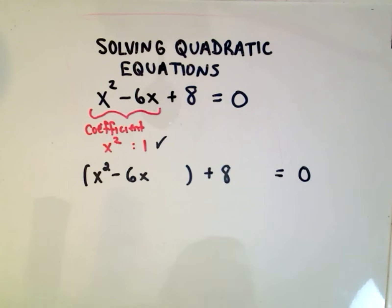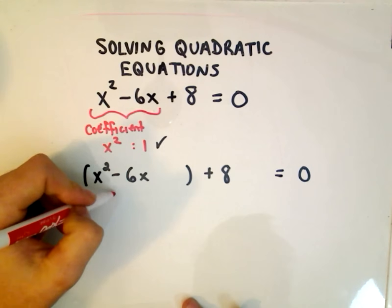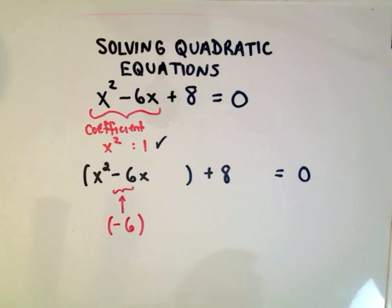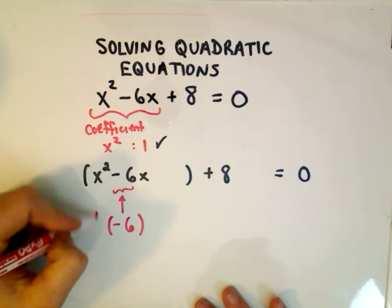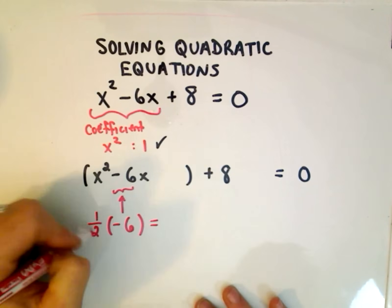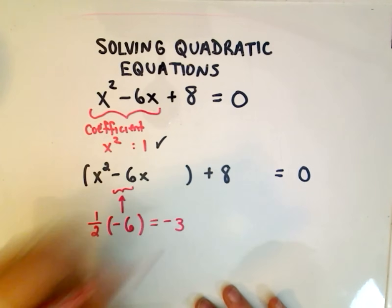So the whole point of the way you complete the square is you look at whatever number is in front of the x term. So in this case, the coefficient on the x term is negative 6. We then take 1 half of that number. So you always take 1 half of it. So 1 half of negative 6 will be negative 3.